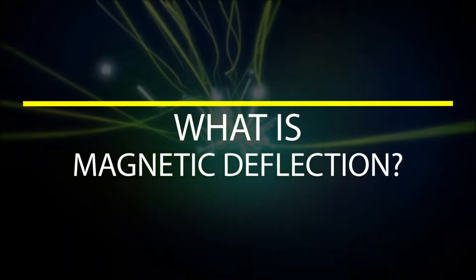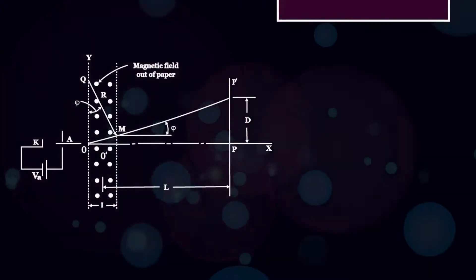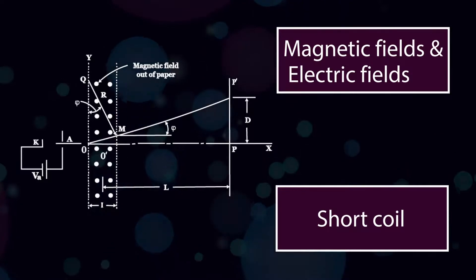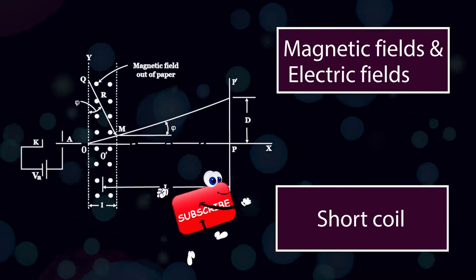What is magnetic deflection? In order to achieve deflection of the electron beam in a CRT, magnetic as well as electric fields may be employed.